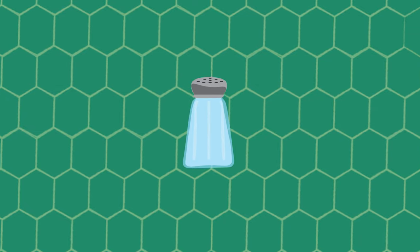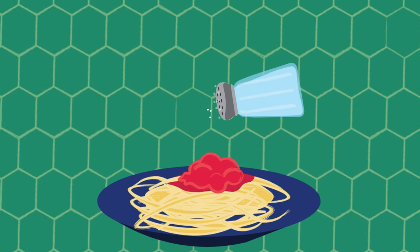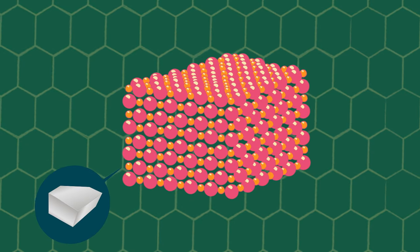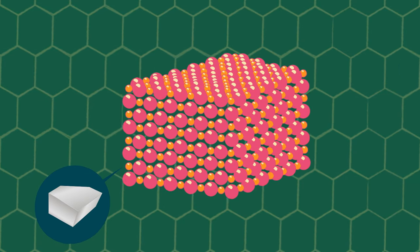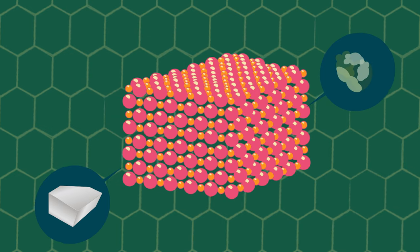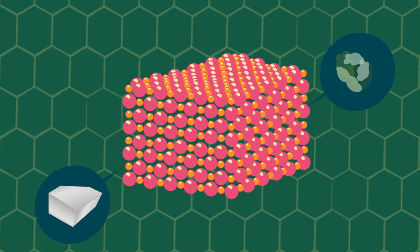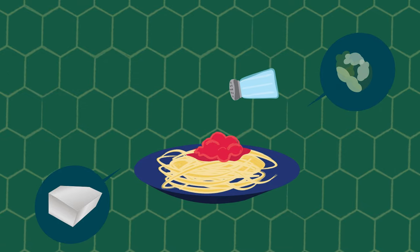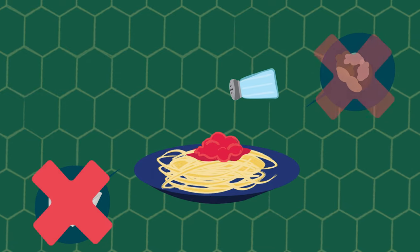For example, we would not predict that table salt, which is used to season food, is made of sodium, a soft, highly reactive metal, and chlorine, a yellow-green gas commonly used as a disinfectant, because table salt does not retain the properties of either sodium or chlorine.